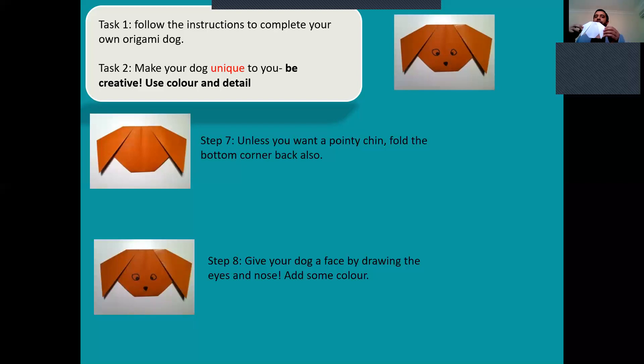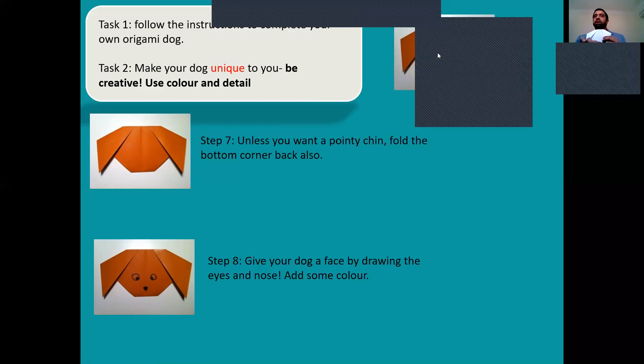The next stage I need to do is task two, which is at the top here, and it says make your dog unique to you, be creative. So start coloring this and put in the facial features—eyes, nose, and mouth—and give it some color. That's your task for today. Please try your best to get this on plain A4 paper. If you haven't got plain, then lined paper will do. If you have any questions, do not hesitate to contact me. Thank you for listening.